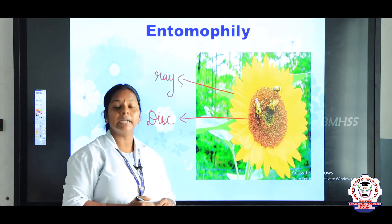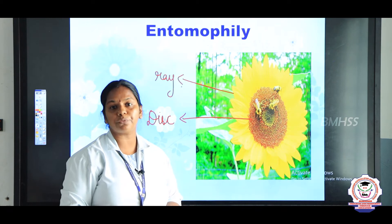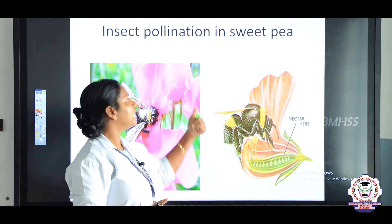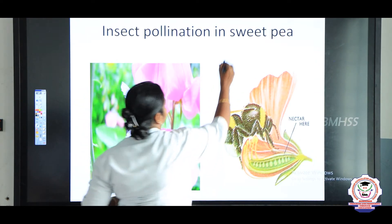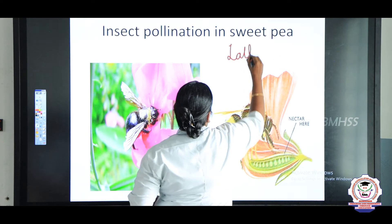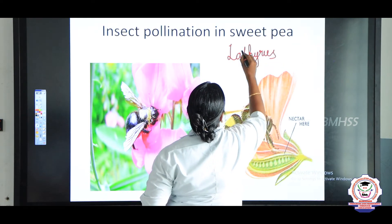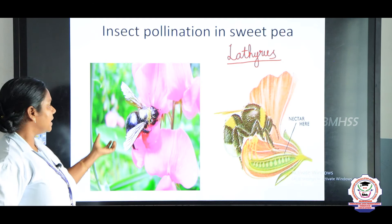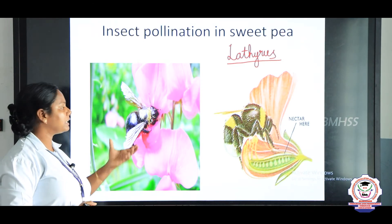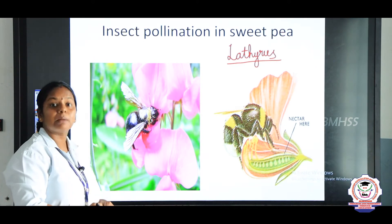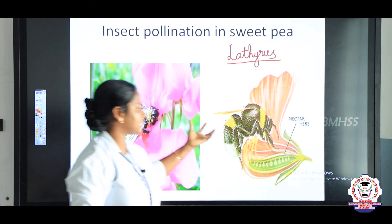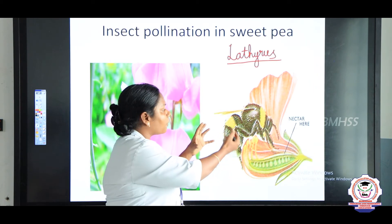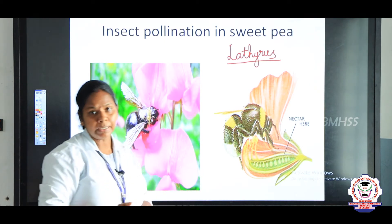So far we have discussed the characteristics of entomophilous flowers. Now we are going to study another example of an insect-pollinated flower — it is sweet pea. The scientific name of sweet pea is Lathyrus. It is pollinated by a bee, and the shape of the flower is butterfly-shaped. It possesses nectar, and when the insect comes to collect the nectar, the pollen grains are dusted on the back of the bee.